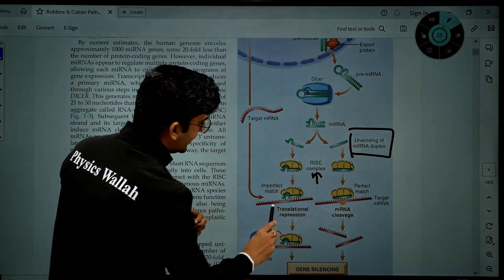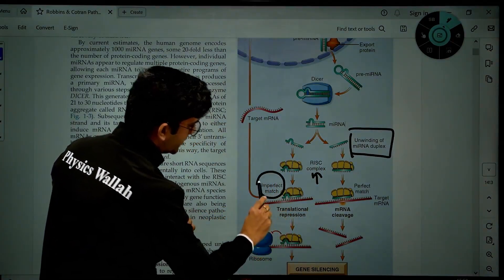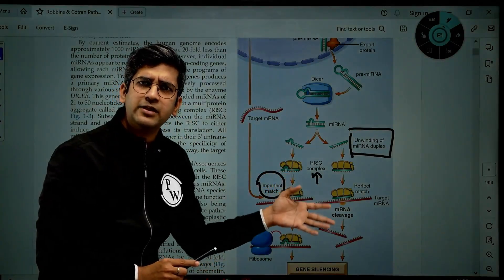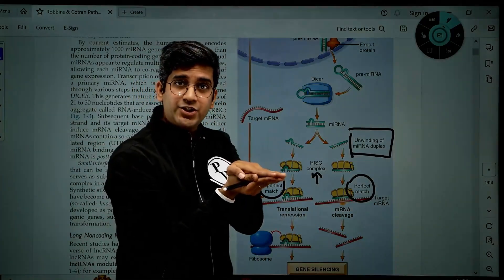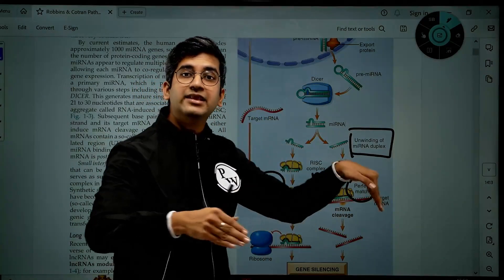There are two possibilities, like I said: it can have an imperfect match, not a perfect binding but an imperfect binding, or it can have a perfect match. If it has a perfect match to a messenger RNA, it will break the messenger RNA, so there is no production of protein.